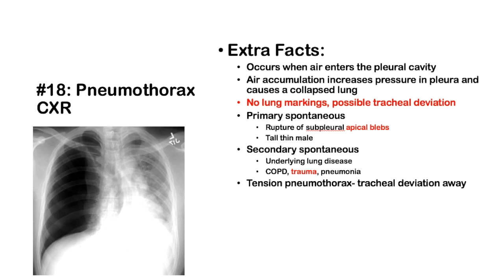Number 18: Pneumothorax on chest X-ray. You'll see no lung markings on one side — it's completely blacked out — while the other side shows normal lung markings. This occurs when air enters the pleural cavity, putting pressure on the pleura and collapsing the lung. Signs include no lung markings and possibly tracheal deviation, which indicates a tension pneumothorax. Primary spontaneous pneumothorax typically occurs in a tall, thin male or one with Marfan syndrome in their 20s or 30s, due to rupture of a subpleural apical bleb. Secondary spontaneous pneumothorax can occur with underlying pathology like COPD, trauma, or pneumonia. Physical exam findings include decreased or absent breath sounds, hyperresonance to percussion, and decreased tactile fremitus.